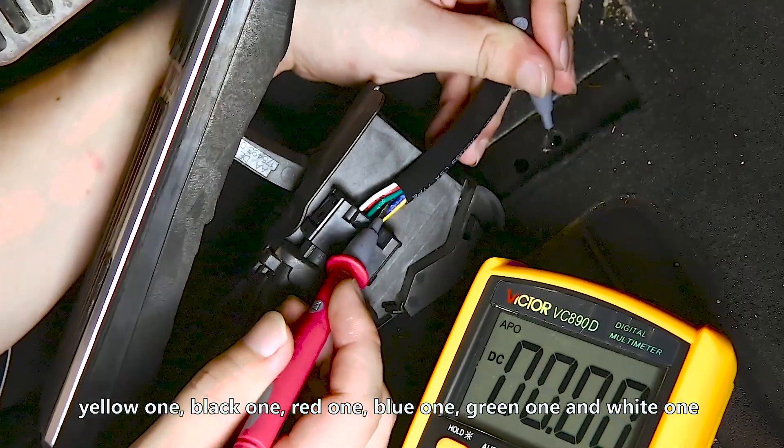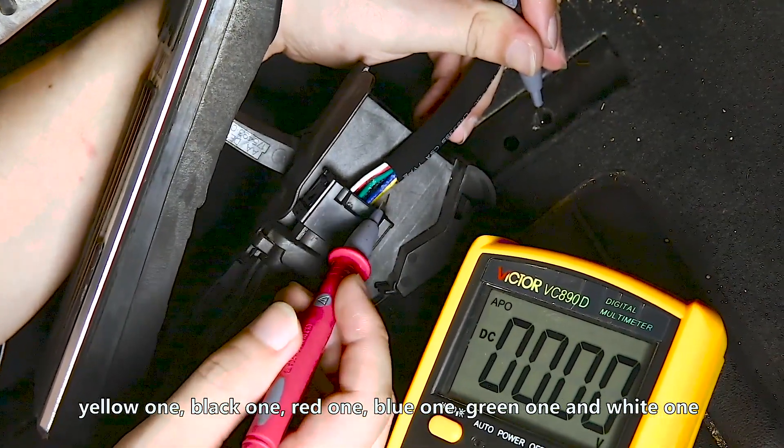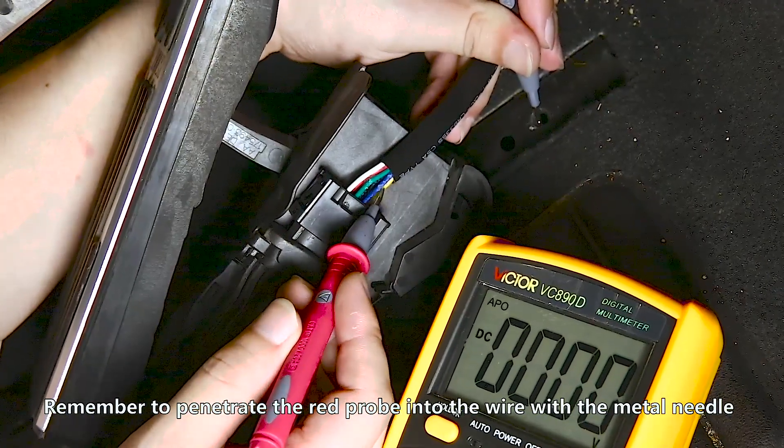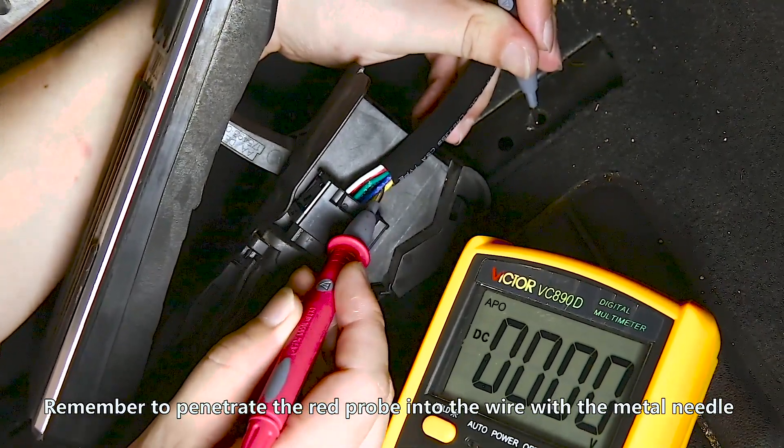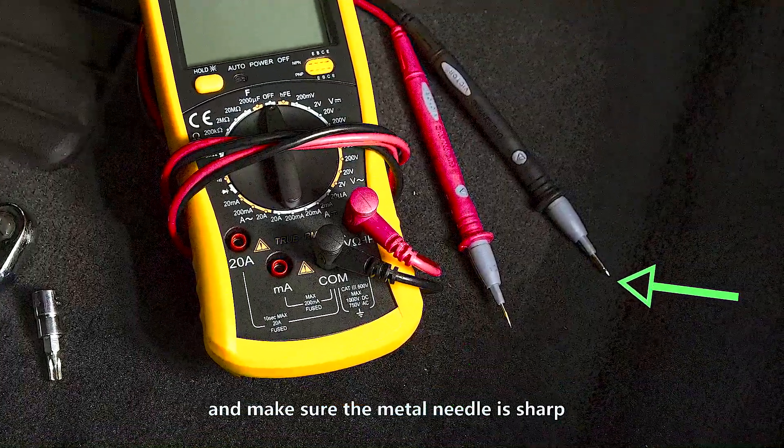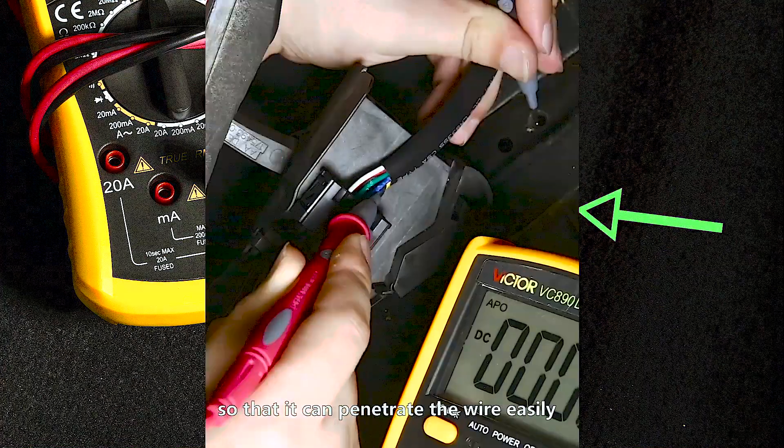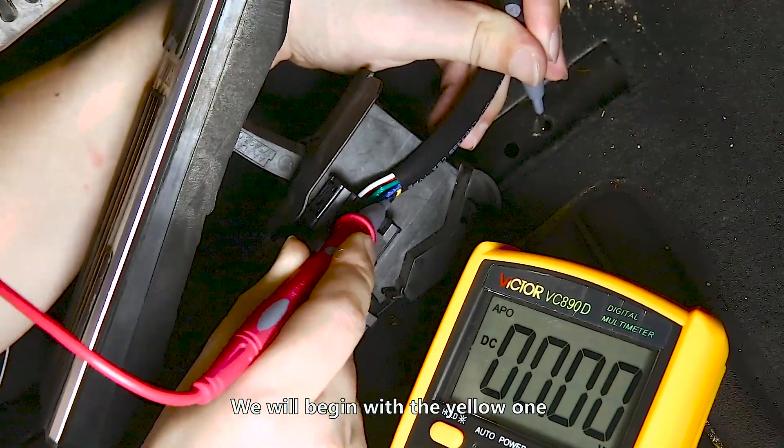Yellow one, black one, red one, blue one, green one, and white one. Remember to penetrate the red probe into the wire with the metal needle. Make sure the metal needle is sharp so that it can penetrate the wire easily. We will begin with the yellow one.